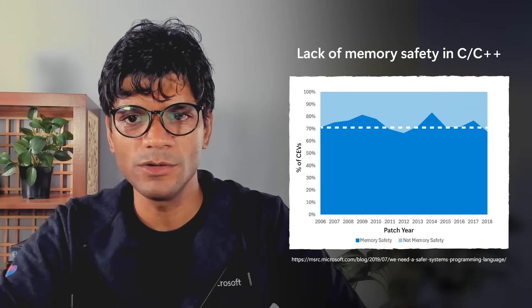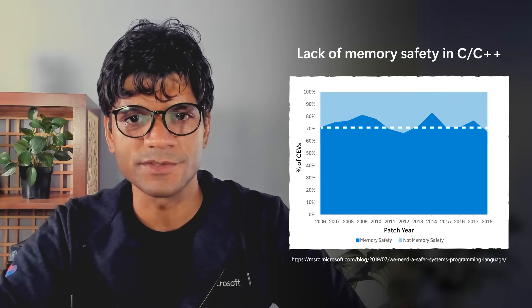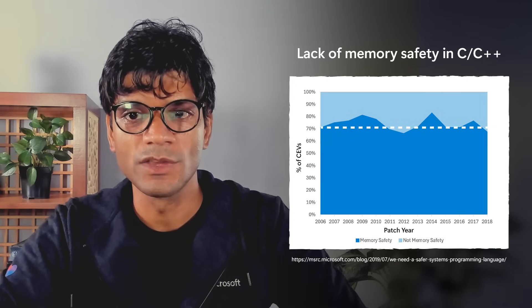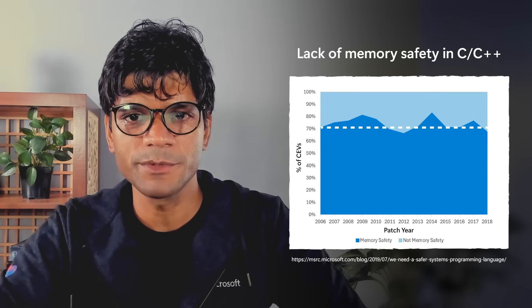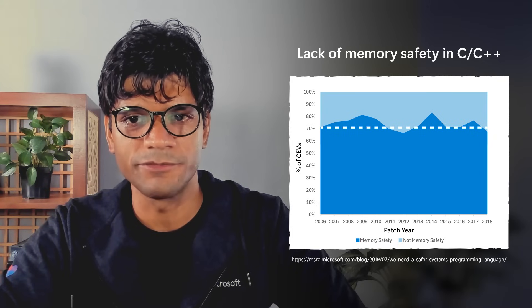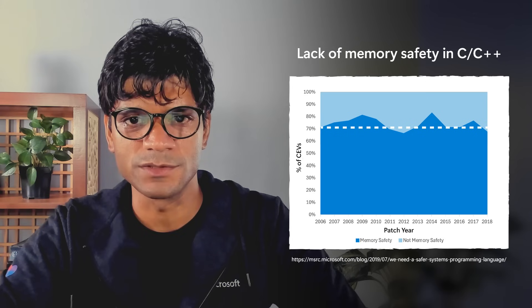The lack of memory safety in low-level languages like C and C++ is one of the leading causes of software security vulnerabilities. For instance, a study by Microsoft estimated that 70% of the security bugs that Microsoft fixes and assigns a CVE every year are due to memory safety issues.